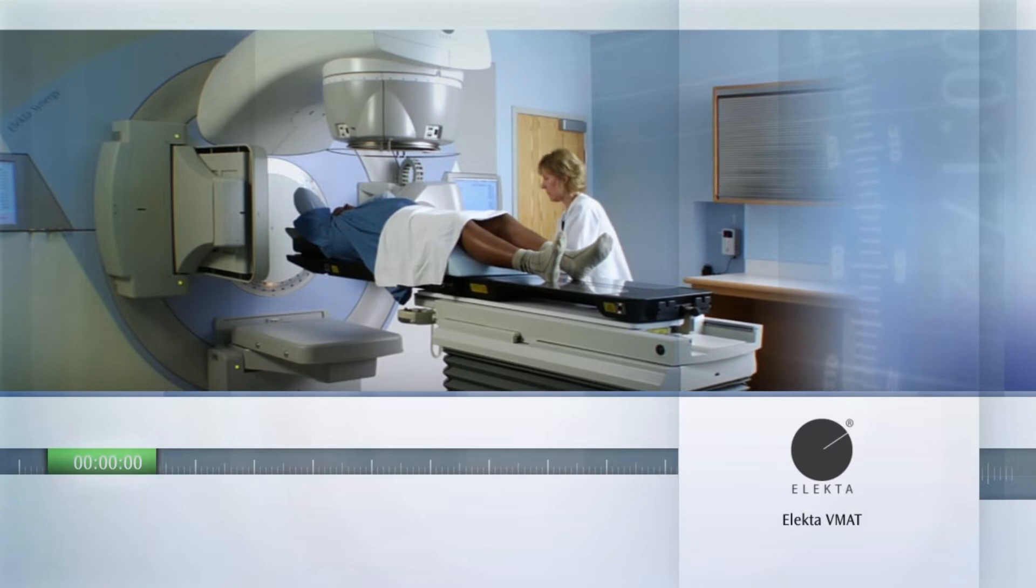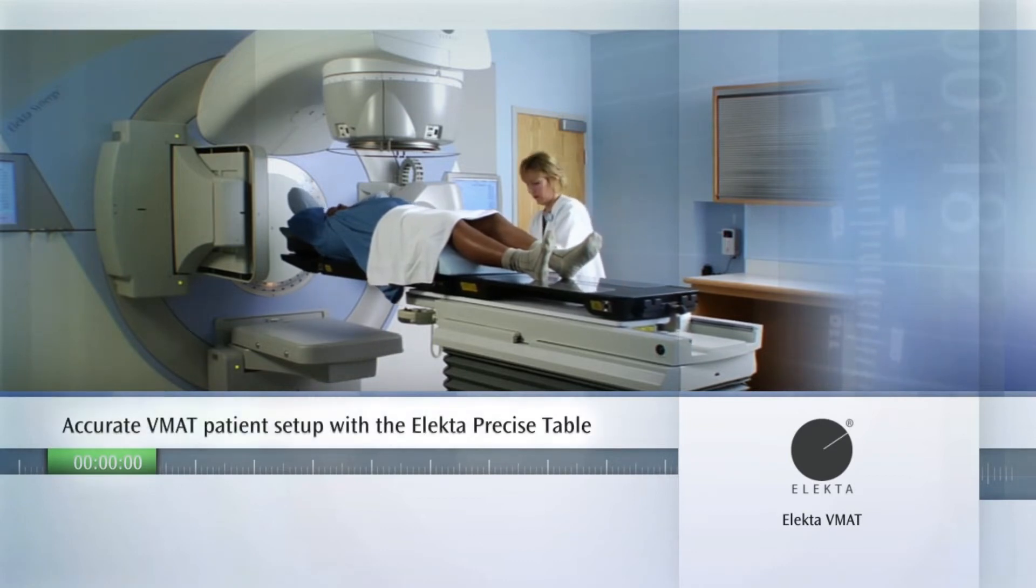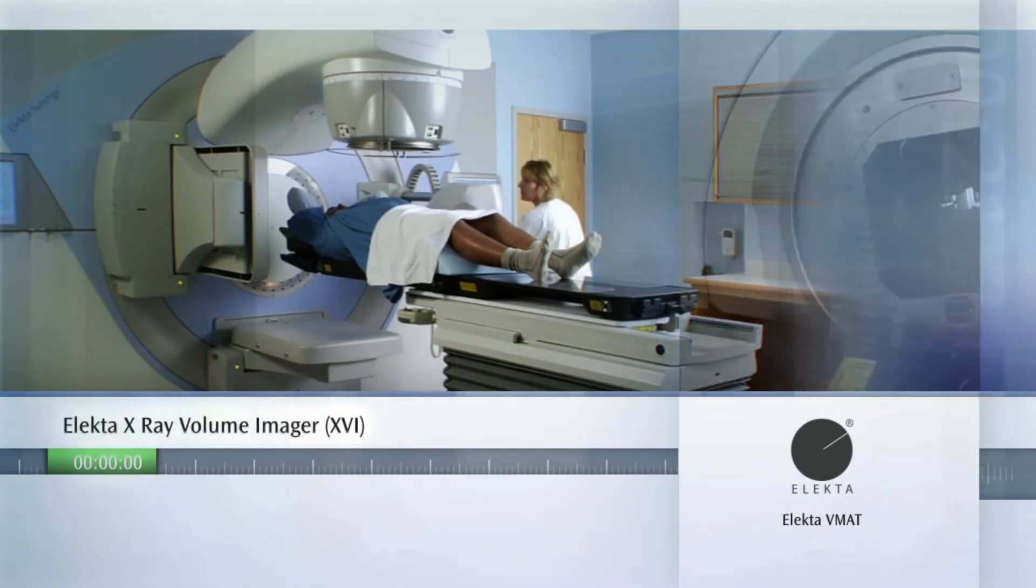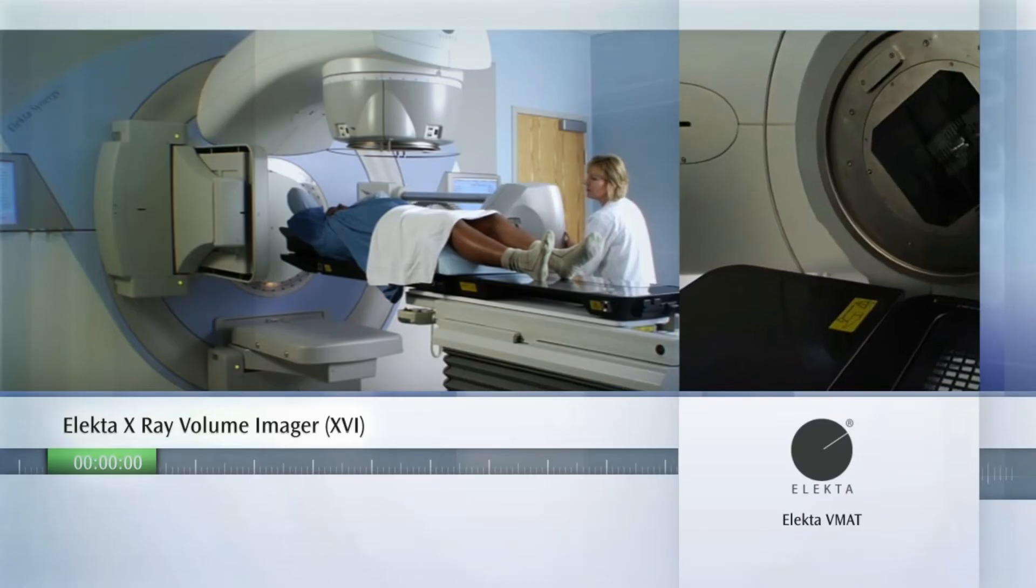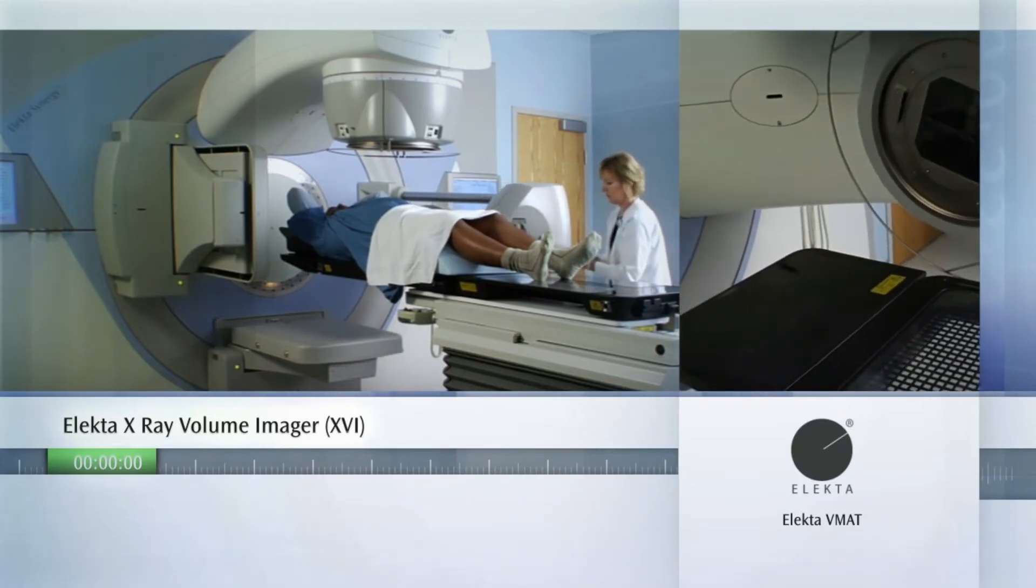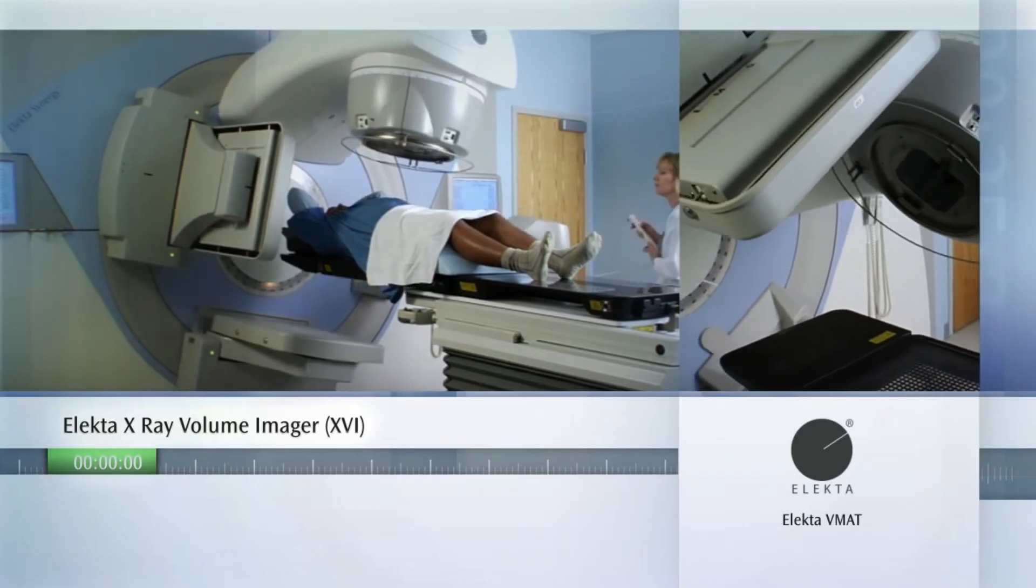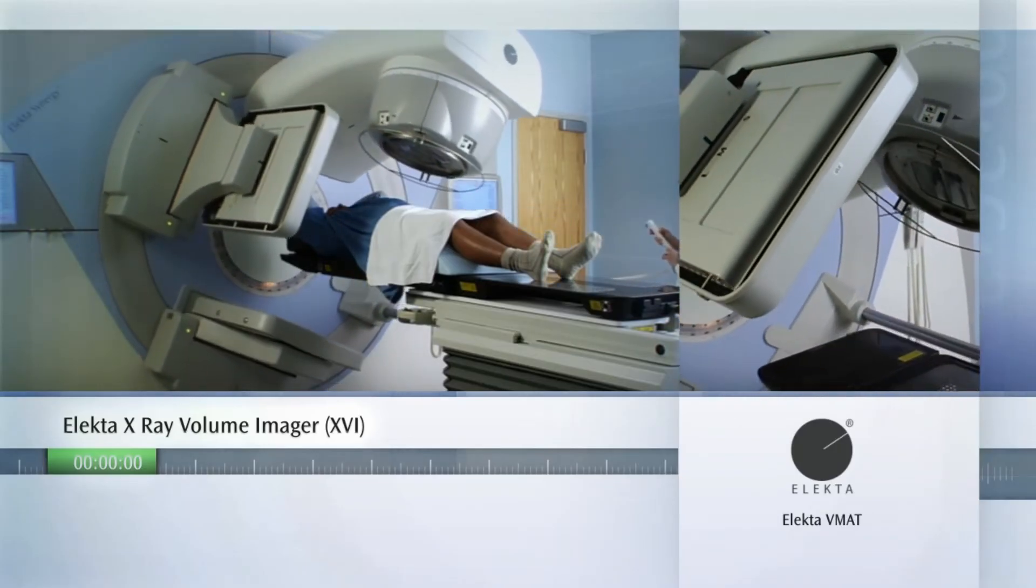The second type of LINAC is volumetric modulated arc therapy, or VMAT. Volumetric modulated arc therapy uses photons, x-rays, generated by a medical linear accelerator. Very small beams with varying intensities are aimed at a tumor and then rotated 360 degrees around the patient. This results in attacking the target in a completely three-dimensional manner.